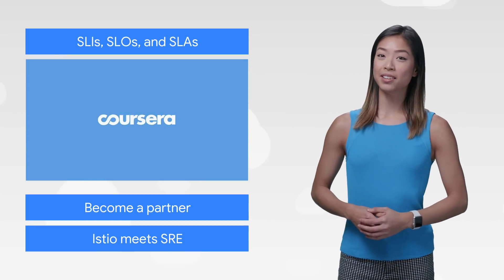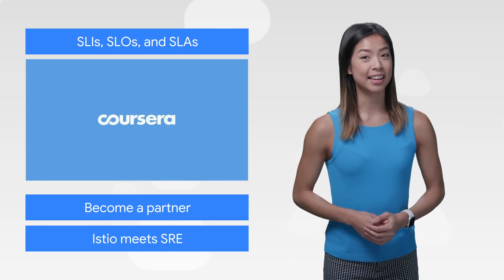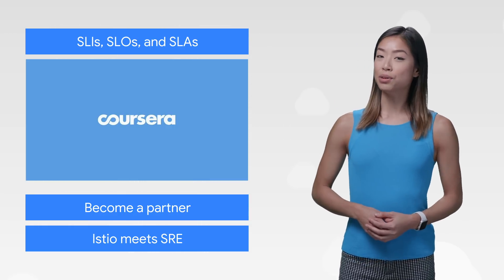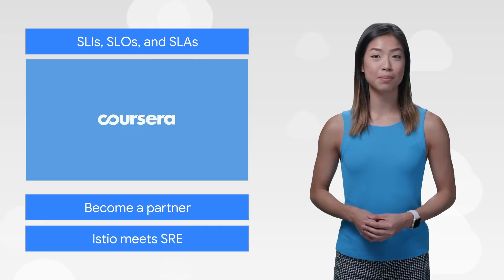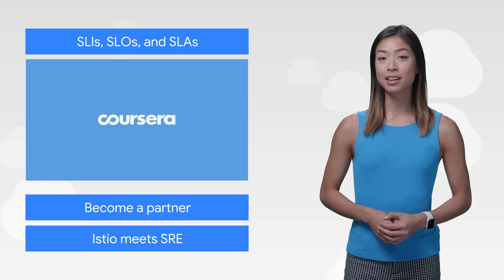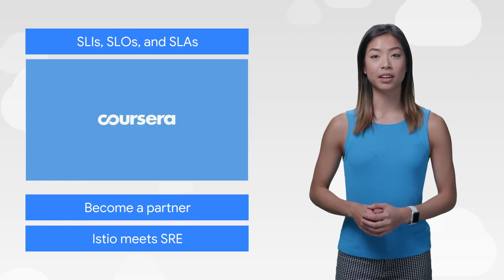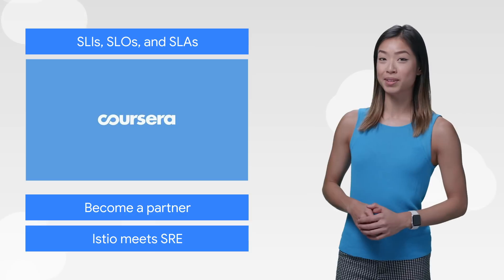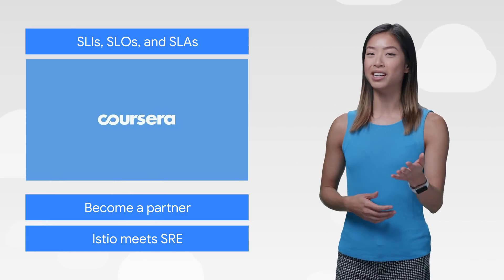You might know that Google wrote the book on Site Reliability Engineering, and now we're adding some new chapters. We've just added a new Coursera course on SRE to help engineers design and manage complex systems that meet their reliability targets. Basically, it distills everything we've learned through trial and error about SRE since we coined the term itself. These best practices are tried and true, so check them out.